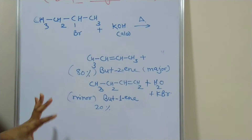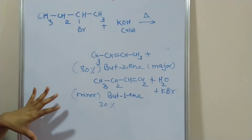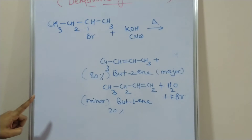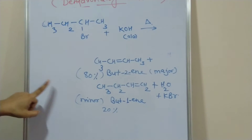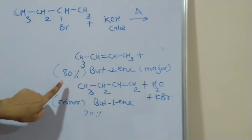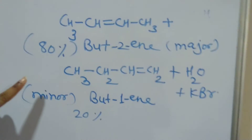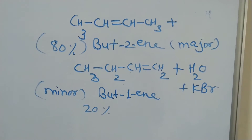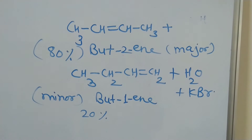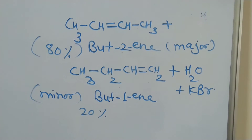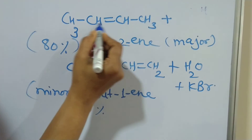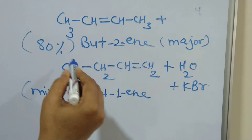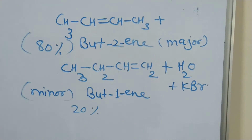In this reaction we are getting two products — two isomers are formed by elimination reaction. The more substituted alkene, which has a greater number of alkyl groups attached to the doubly bonded carbon atom, is preferred and gives the major product.